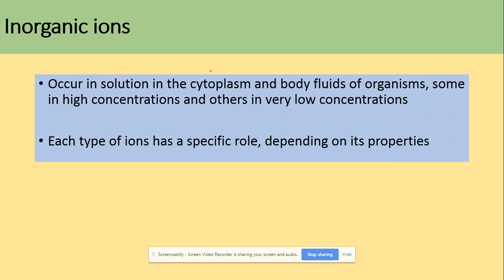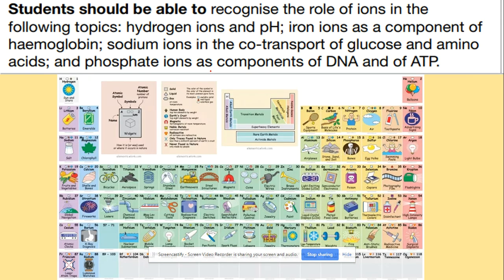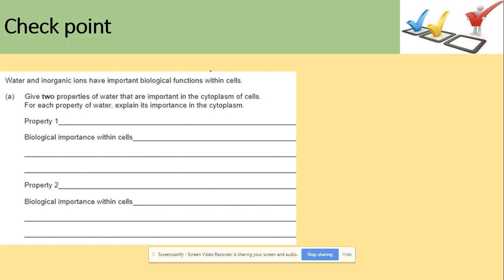Inorganic ions occur in solution in the cytoplasm and body fluids of organisms — some in high concentrations and others in very low concentrations. Each ion has a specific role depending on its properties. Key examples from the specification include: iron ions as a component of haemoglobin, sodium ions in the co-transport of glucose and amino acids, and phosphate ions as a component of DNA and ATP.